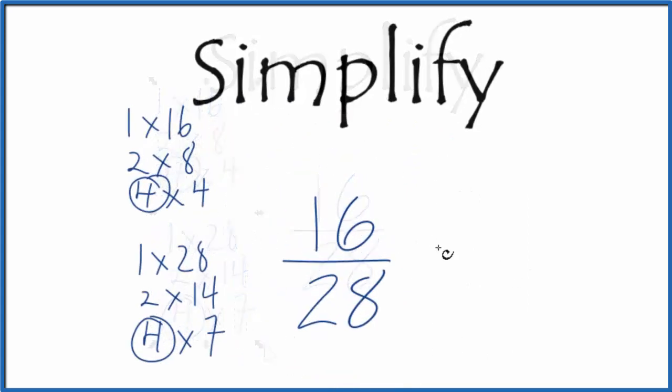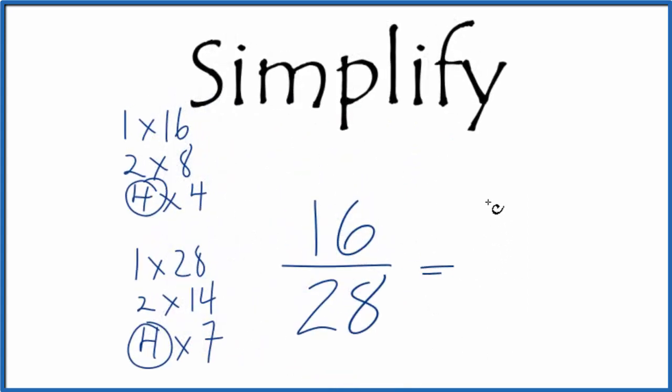So we're going to divide 16 by 4, that gives us 4. 4 times 4 is 16. And we'll divide 28 by 4 which gives us 7. And that means we've simplified the fraction 16/28 down to 4/7.